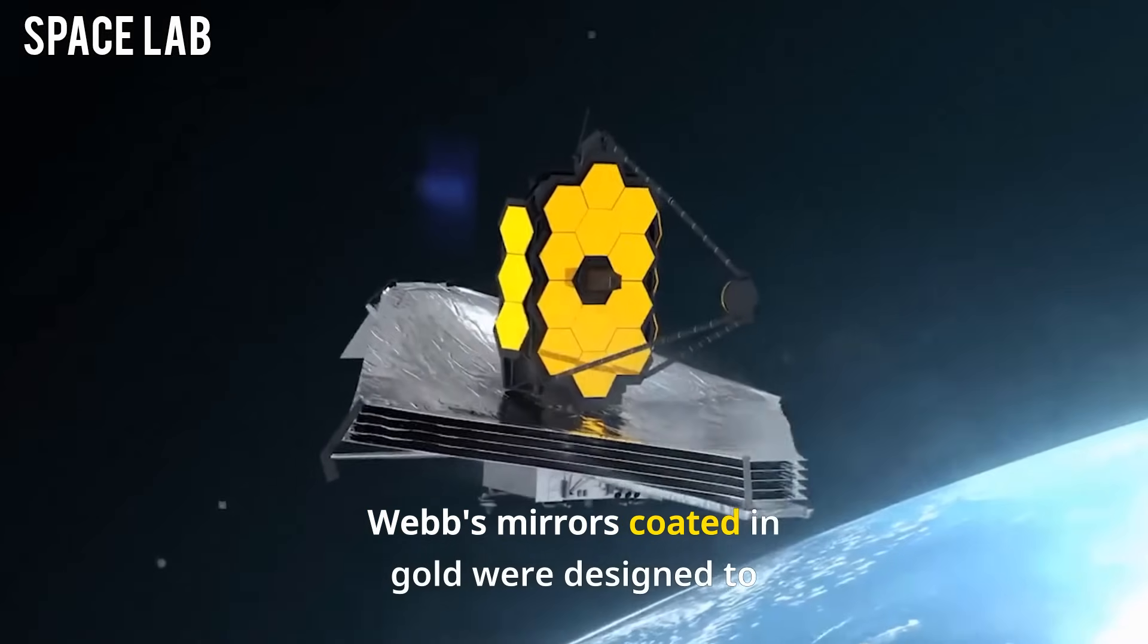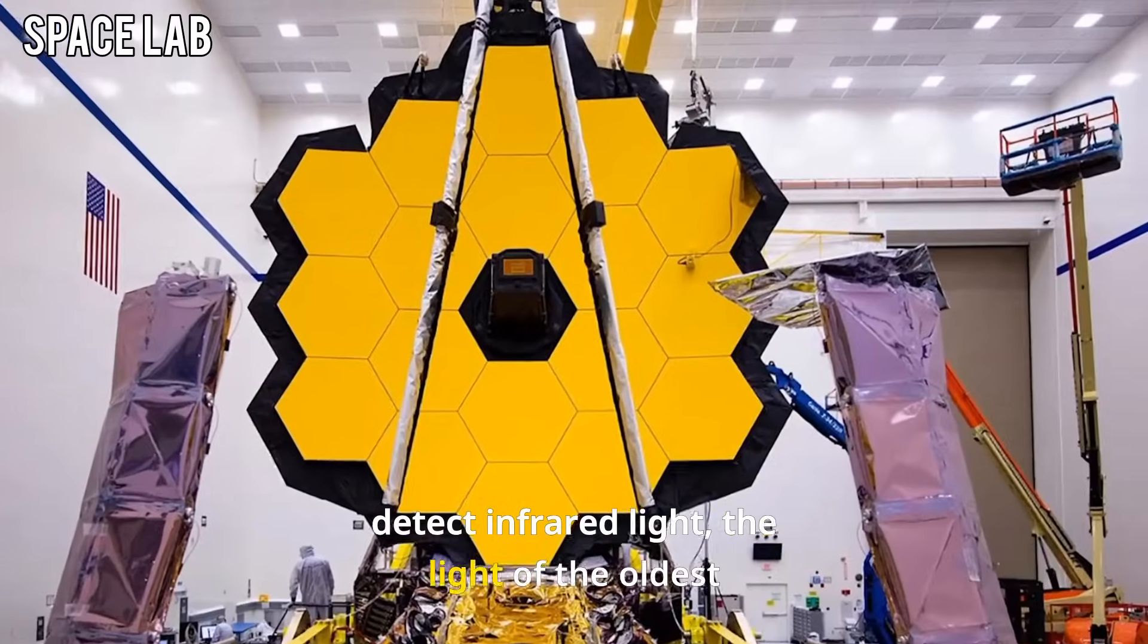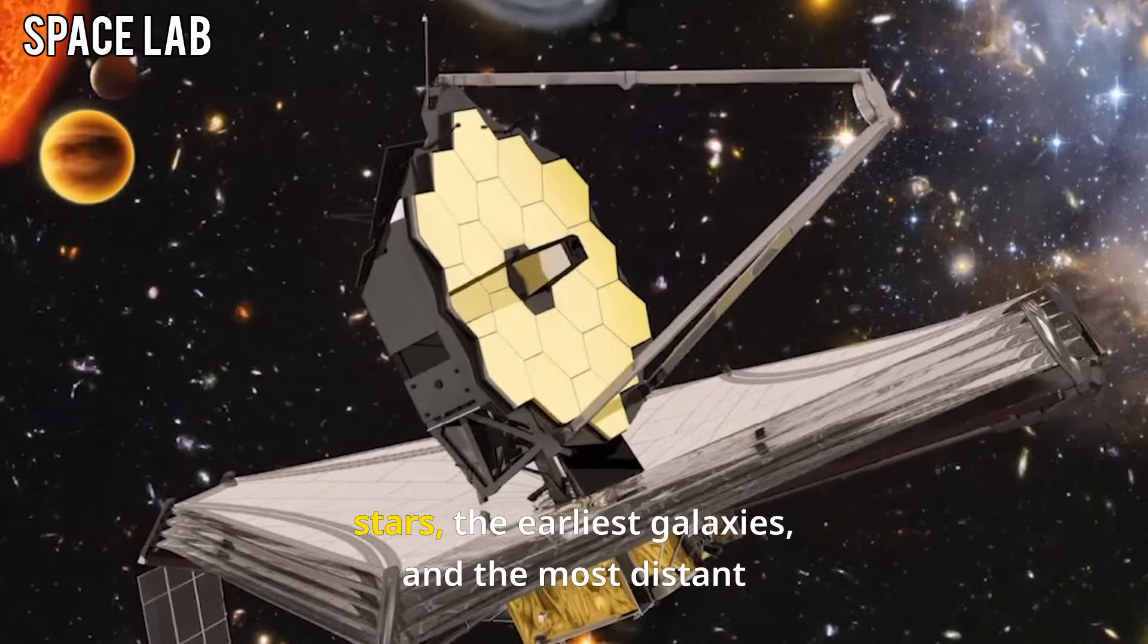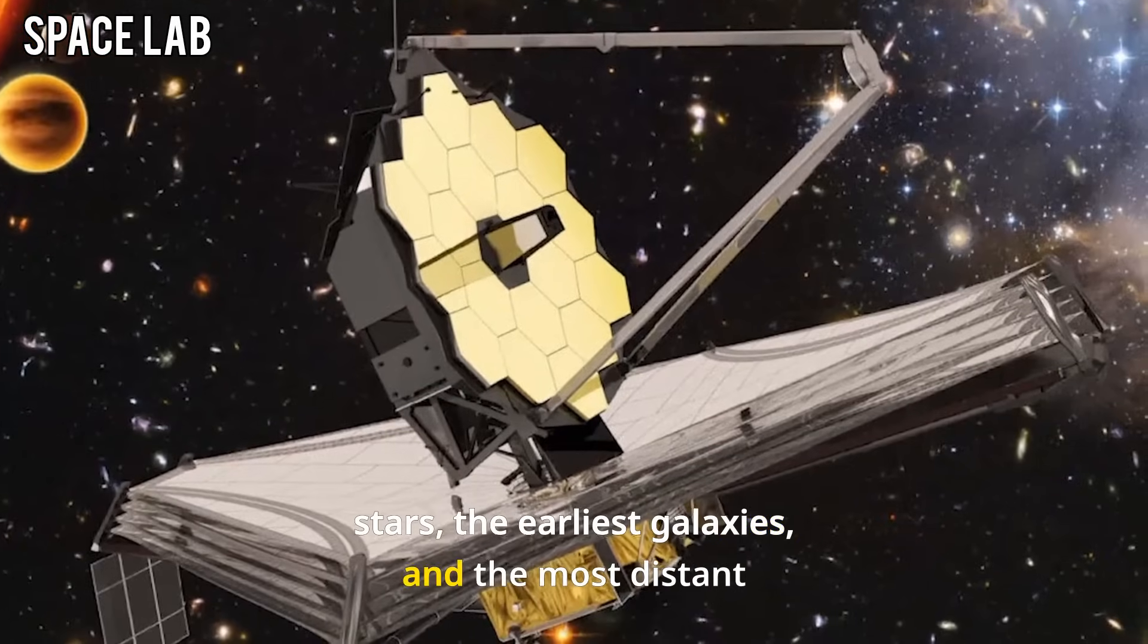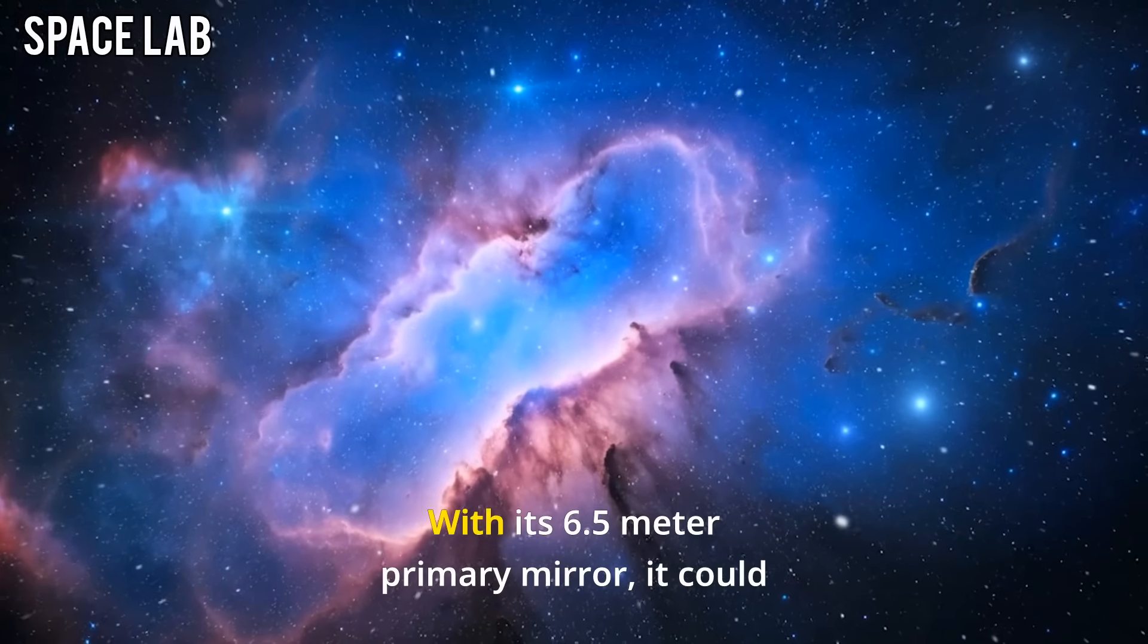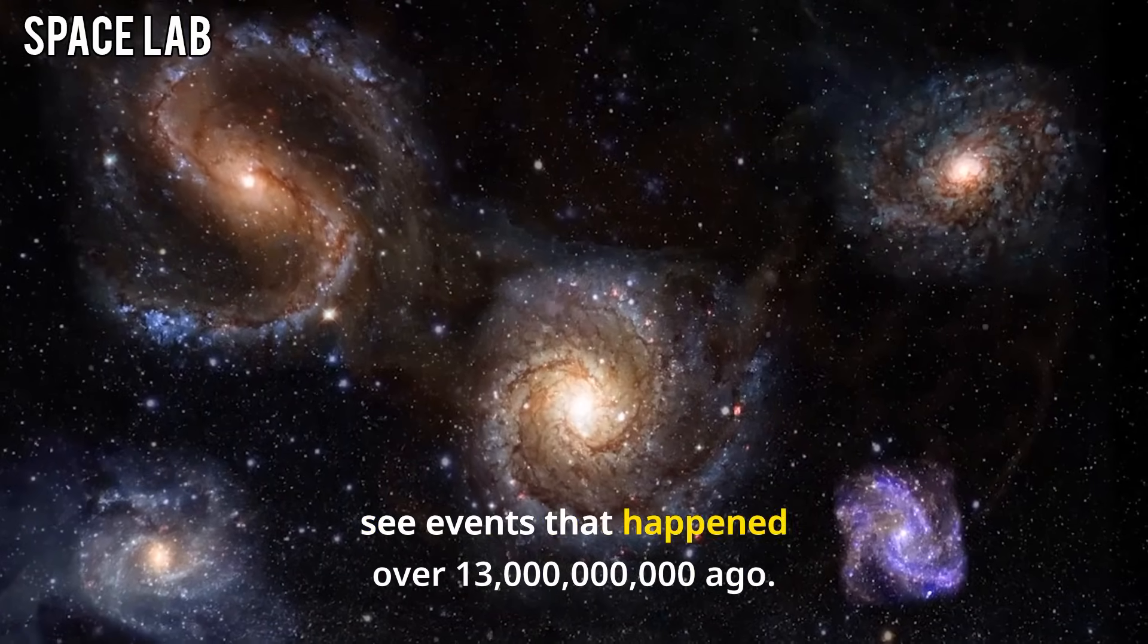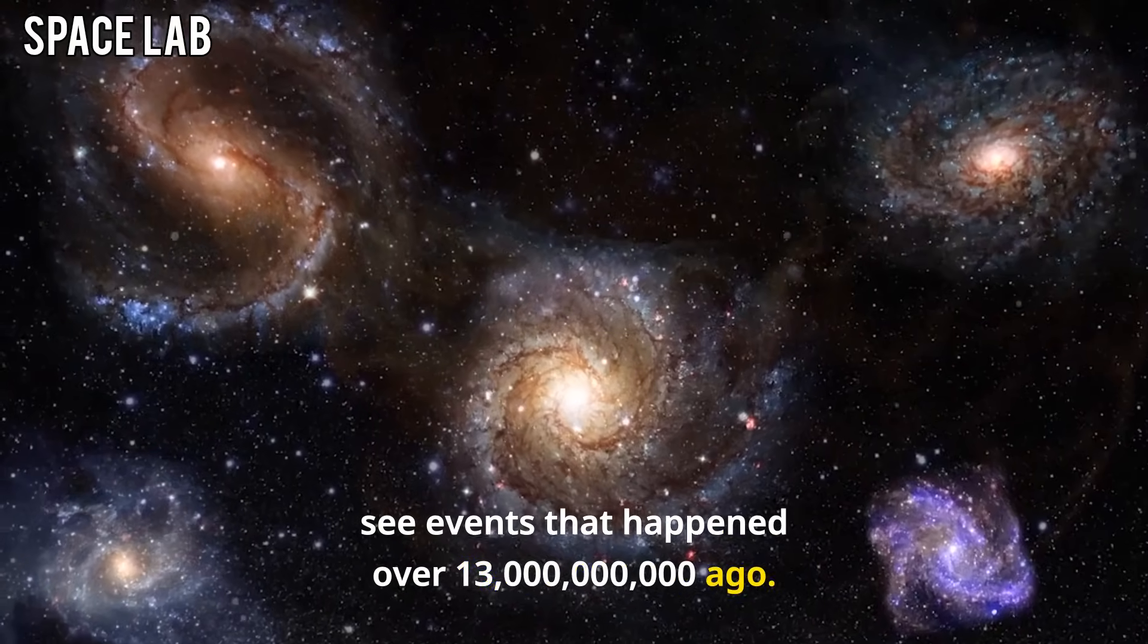Webb's mirrors, coated in gold, were designed to detect infrared light, the light of the oldest stars, the earliest galaxies, and the most distant corners of the universe. With its 6.5 meter primary mirror, it could see events that happened over 13 billion years ago.